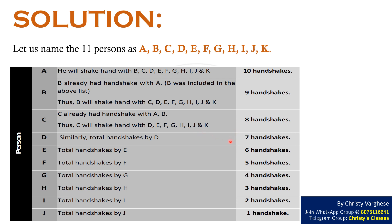Similarly, total handshakes by D equals 7, total handshakes by E equals 6, total handshakes by F equals 5, total handshakes by G equals 4, total handshakes by H equals 3, total handshakes by I equals 2 and total handshakes by J equals 1.